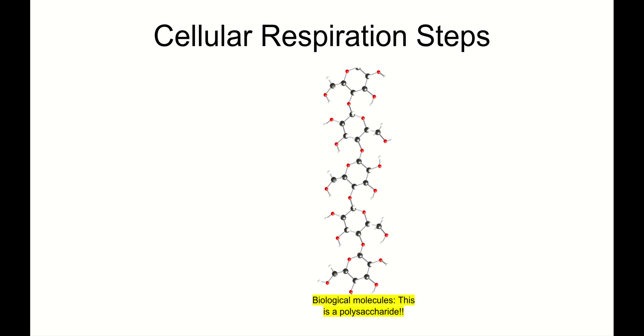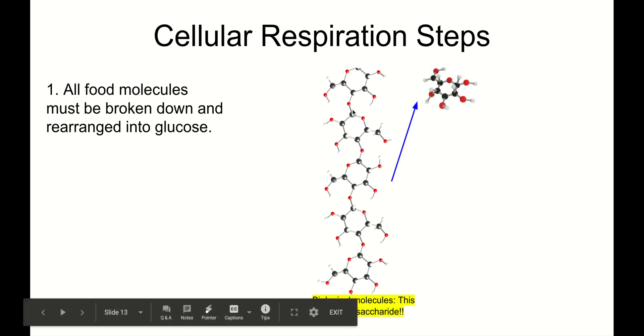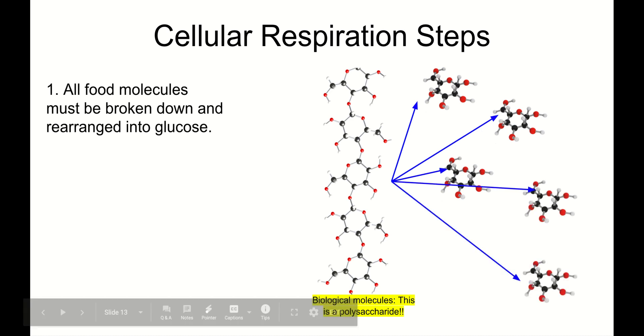Now let's talk through the cellular respiration steps. This is really another part of the video where I'm going to ask you to record all of this text, because it's going to help you understand this concept better. So, let's start with step one. Step one: all food molecules must be broken down and rearranged into glucose. Here, I've got a polysaccharide. You can see all of the glucoses that are bonded together. Our first step is, let's break them down. Let's break down our giant polysaccharide into five separate, smaller glucose monomers.